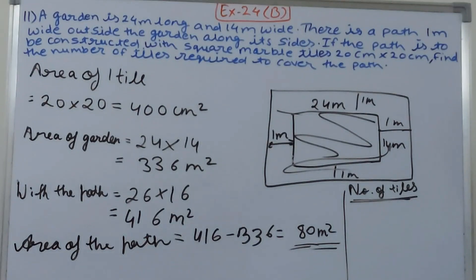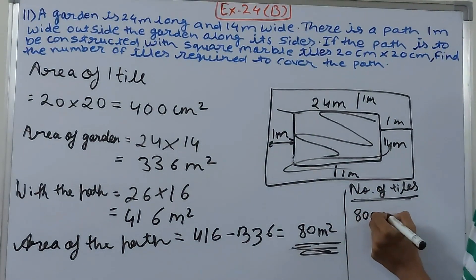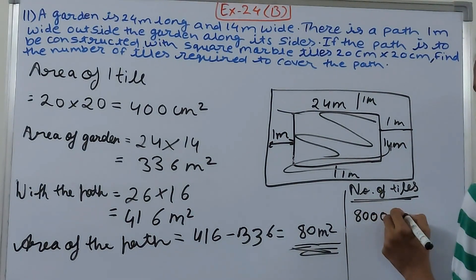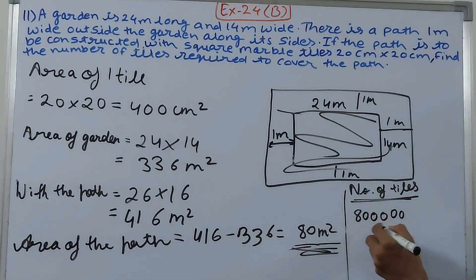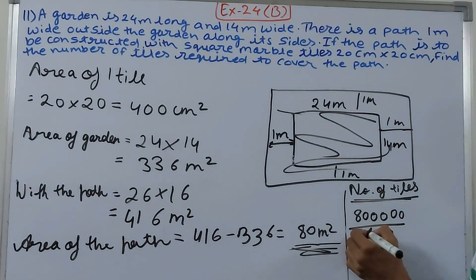So what does this become? 80 square meters becomes 800,000 square centimeters upon 400. 8 goes into 4 twice, and 3 zeros, so 2000.